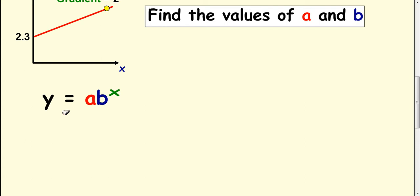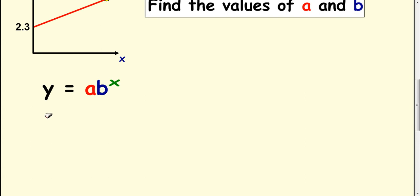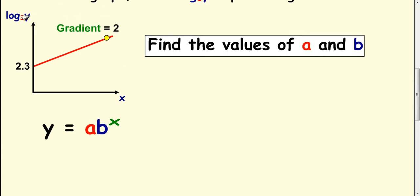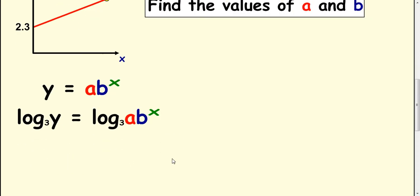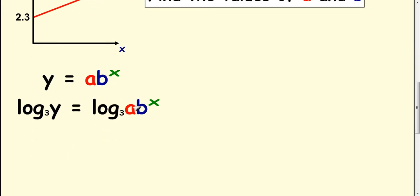So start off with this format, and just do what we did in the last screen. Take logs of both sides, this time to the base 3, because we've got a 3 up here, like that. Split this up to a plus.